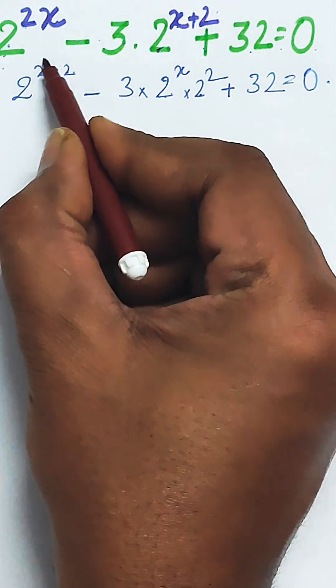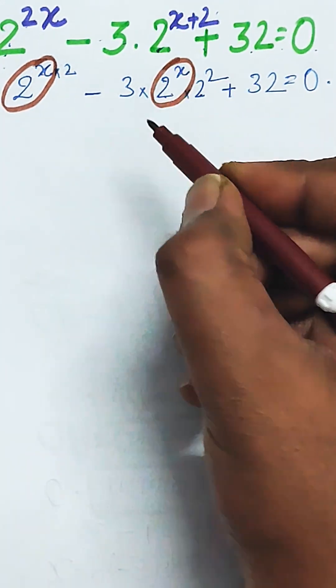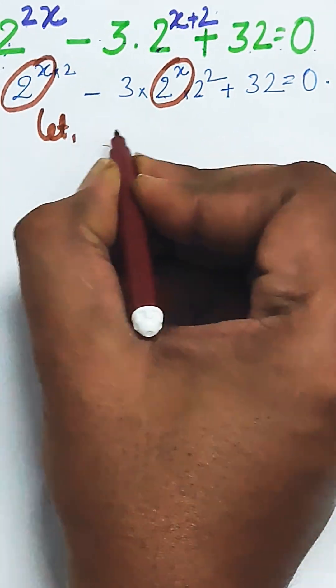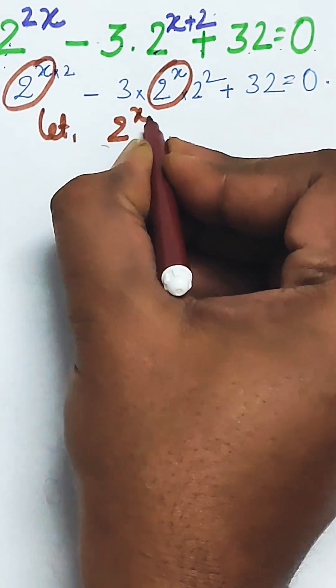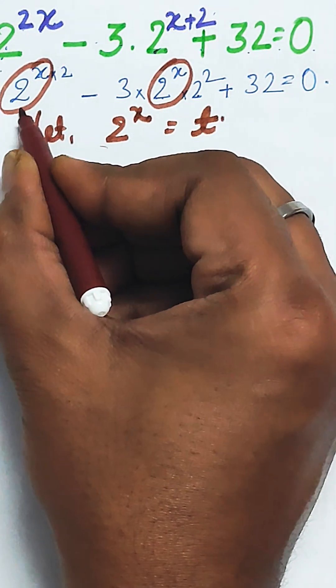Here you can see 2 to the power x is coming repeatedly, and this is carrying the variable. So let us assume that 2 to the power x as equal to t.